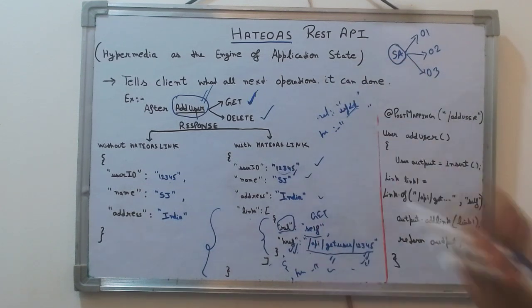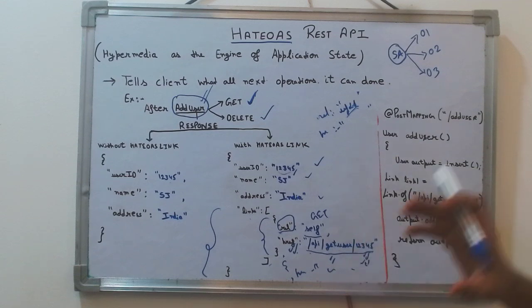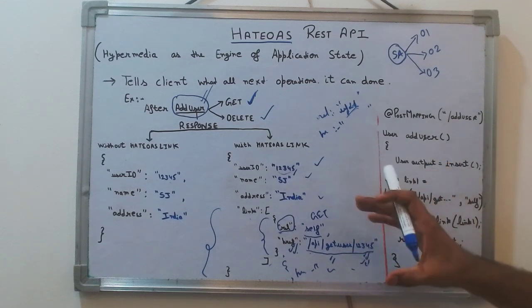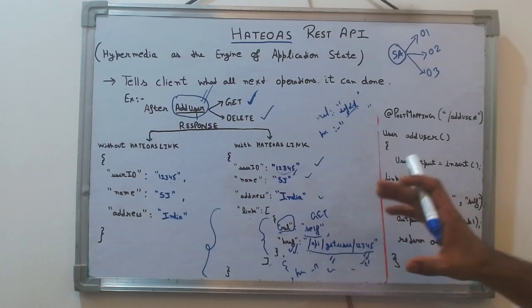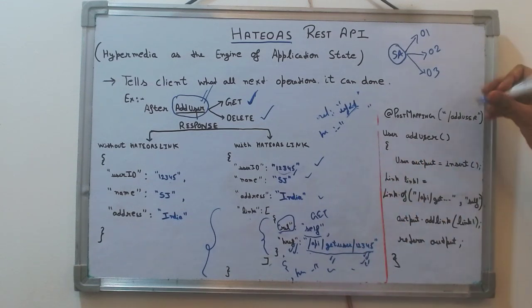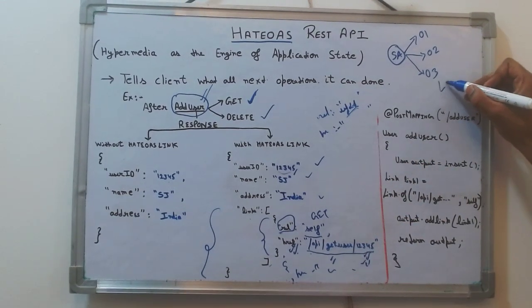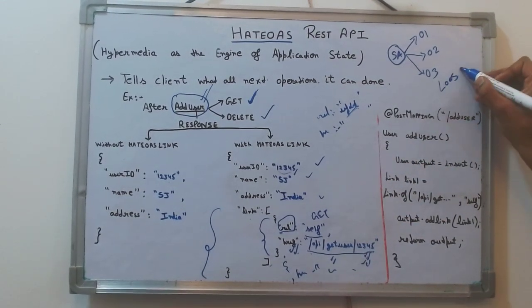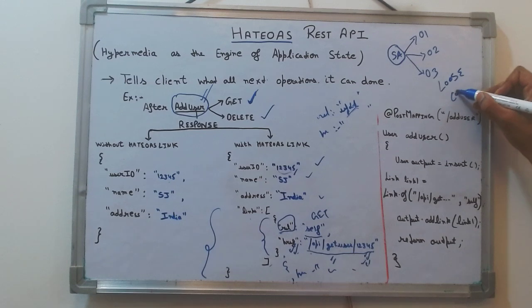So what is the purpose of adding a HATEOAS link in the response? The main purpose is to tell the client what the next operation it can do is.